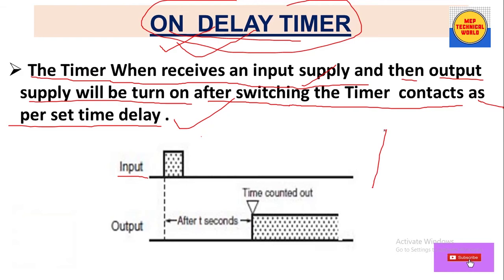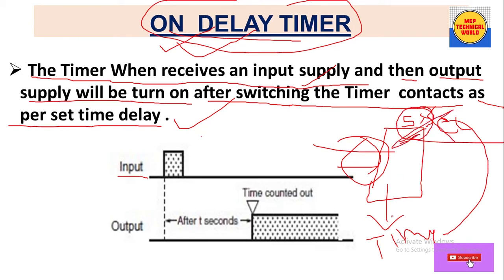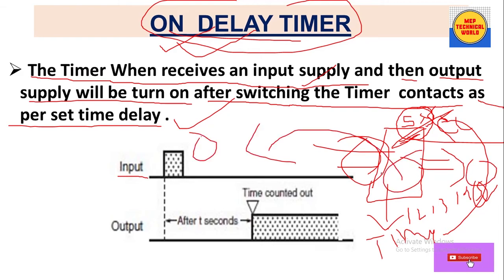Simply put: if we set the on delay timer to 5 seconds and it gets input supply, it starts counting. After reaching 1, 2, 3, 4, 5 seconds, it gives the output signal. This is the basic working of the on delay timer.